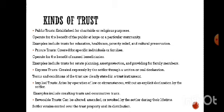Kinds of trust: first, a public trust is established for charitable or religious purposes and operates for the benefit of the public at large or a particular community. Examples include trusts for education, healthcare, poverty relief, and cultural preservation. Second, a private trust is created for specific individuals or families and operates for the benefit of named beneficiaries. Examples include trusts for estate planning, asset protection, and providing for family members.